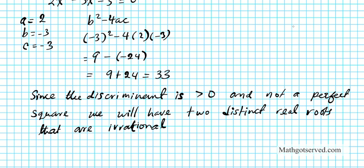So when we take the square root of 33, it cannot be broken down — it doesn't have a whole number square root, so it's going to remain radical. Because of this irrational number, the final solution is going to be irrational. It's greater than zero, so it's real, and since it's not a perfect square, that makes it irrational. For example, if the discriminant were 49, when we take the square root of 49 we get 7, which is rational.